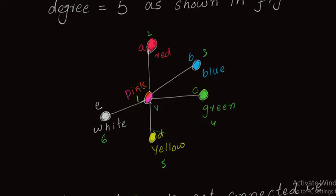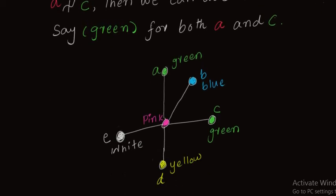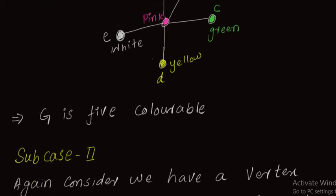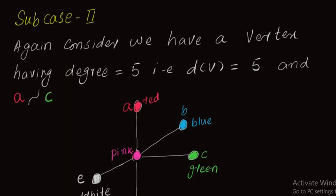If a and c are not connected — that is, a is not adjacent to c — then we can use the same color, say green, for both a and c as shown in the figure. When a and c are not connected, we use the same color for a and c, so the total number of colors used becomes five. In this case, our graph is five colorable.